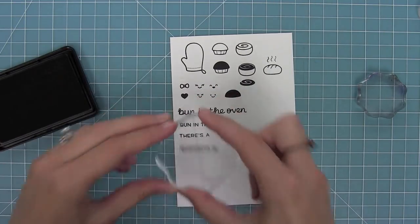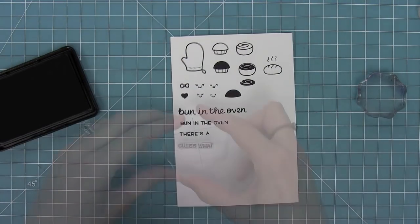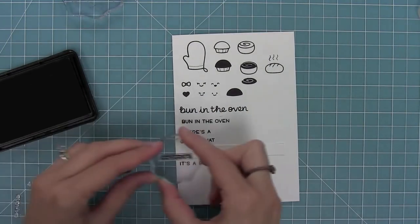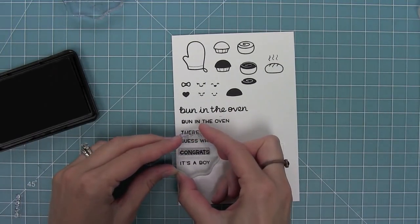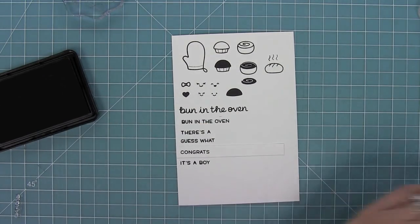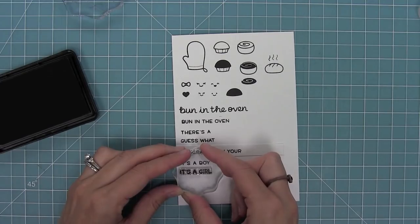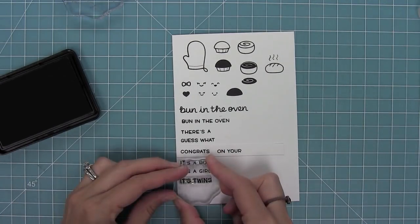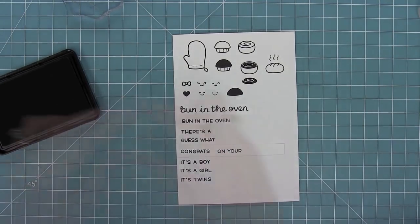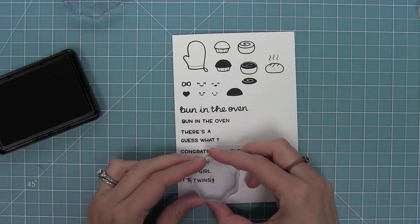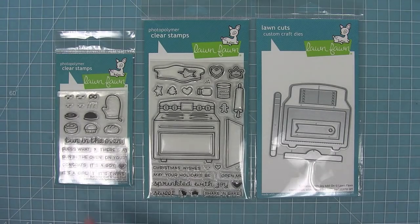We have the words Bun in the Oven in two sizes and there's a to go with bun in the oven. We have guess what, congrats, and on your so you can say bun in the oven after that. Then we have it's a boy, it's a girl, and it's twins. We have a question mark to add to the end of the guess what and an exclamation point to add to the ends of phrases.